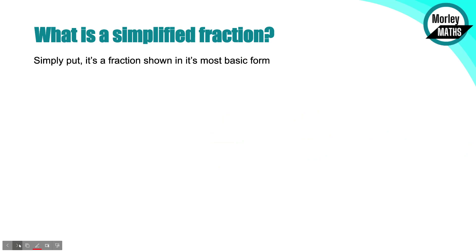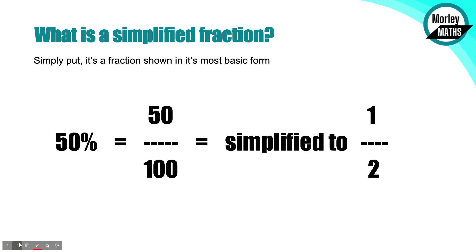So what is a simplified fraction? Simply put, it's a fraction shown in its most basic form. For example, 50% - if we think of that as being half of something, you can write a percentage as 50 out of 100 if you put it in fraction form, because essentially that's all a percentage is, it's just a fraction that's out of 100. And you can then obviously simplify that to one half.